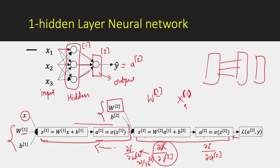Deep neural networks will have multiple hidden layers, multiple weights between these layers, one output layer, and some input values. We will look at more technical details in upcoming videos.